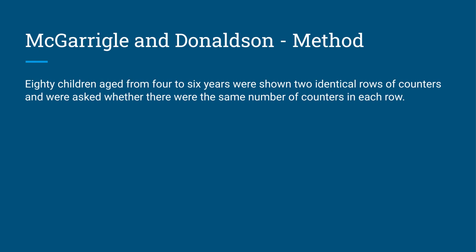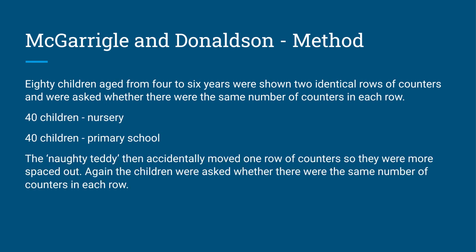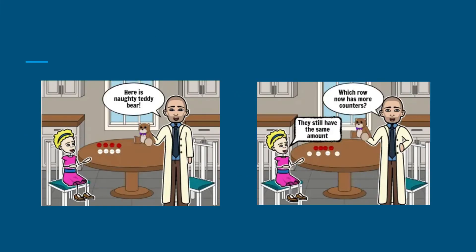They got 80 children, all from Edinburgh, ages four to six, and they were shown two identical rows of counters and asked whether there were the same number of counters in each row. There were 40 children from a nursery class and 40 children from a primary school. Then a Naughty Teddy was introduced and accidentally moved one of the rows of counters so they were more spread out. Again, the children were asked whether there were the same number of counters in each row — the Naughty Teddy had spread the white counters out a little bit more.